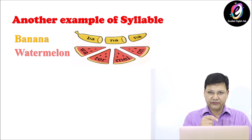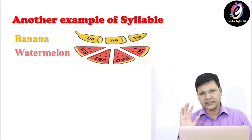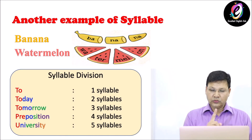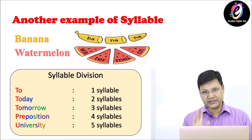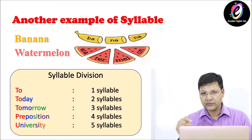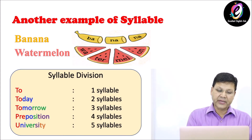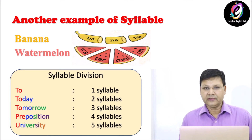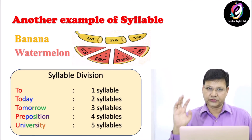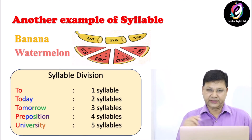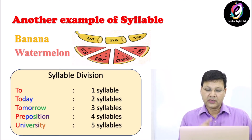One more example: 'table' — two strokes, one syllable. 'Today' — two strokes, two syllables. 'Tomorrow' — three syllables. 'Pre-po-si-tion' — four strokes, four syllables. 'University' — five syllables. A word may be a one-syllable word or more than one syllable word.